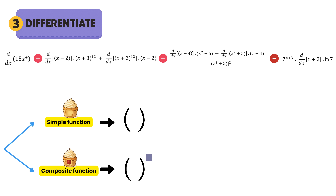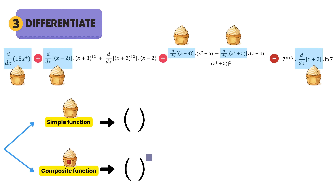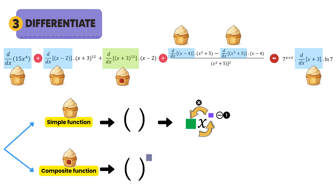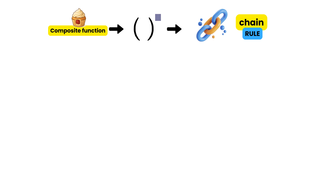Going back to our example: all we're checking is whether the bracket has a power. If yes, it's a composite function; if no power on the bracket, it's a simple function. In our example, the following differentiations are simple functions because there's no bracket raised to a power, but one of them is a composite function because its bracket has been raised to a power. For simple functions we use the circle trick — our usual shortcut method — but for a composite function we need a new method called the chain rule, to make sure we catch all the hidden x's.